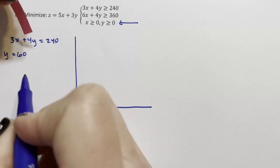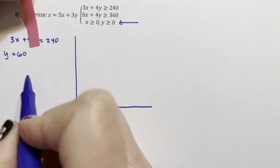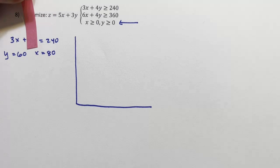And then we're going to say, what happens when y is zero? Well, if y is zero, then 3x equals 240 and x equals 80. So these are just intercepts.